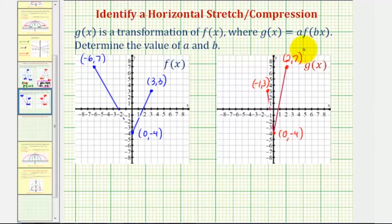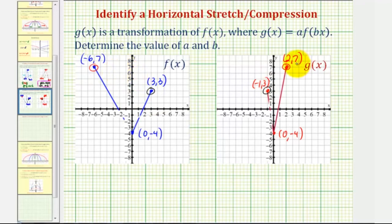This one's a little trickier, because notice how the high point on f of x is to the left, and the high point on g of x is to the right. This means this point here corresponds to this point, and this point here corresponds to this point. The corresponding points have the same y coordinates — no vertical stretch or compression — but the x coordinates have changed, and they've also been reflected across the y axis. Which means f of x has been compressed horizontally and also reflected across the y axis.